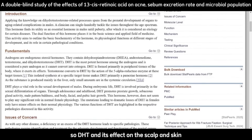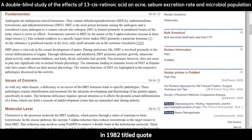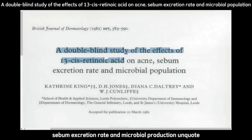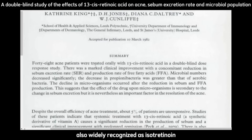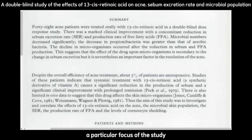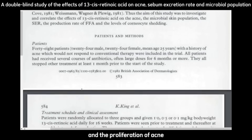In a pivotal study conducted by King et al. in 1982, titled "A Double-Blind Study of the Effects of 13-cis-Retinoic Acid on Acne, Sebum Excretion Rate, and Microbial Production," the impact of 13-cis-retinoic acid — also widely recognized as isotretinoin — was investigated in the context of acne treatment and related physiological variables such as sebum excretion and microbial population on the skin. A particular focus showcased the relationship between sebum, specifically its triglyceride content, and the proliferation of acne.